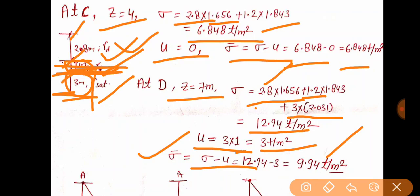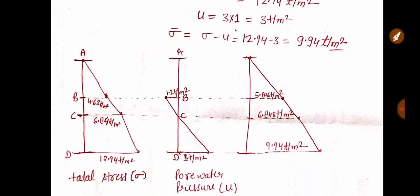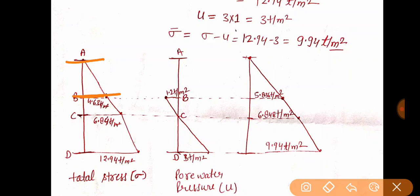This question is important — a little lengthy, a little conceptual — but if you still have doubt, tell me in the comment section. Finally, what we need to do is plot the distribution. For total stress: at A = 0, at B = 4.63, at C = 6.84, at D = 12.94. Connect all these positive values — this is the distribution of total stress. Note: draw a roughly schematic diagram, no need to draw it to scale.